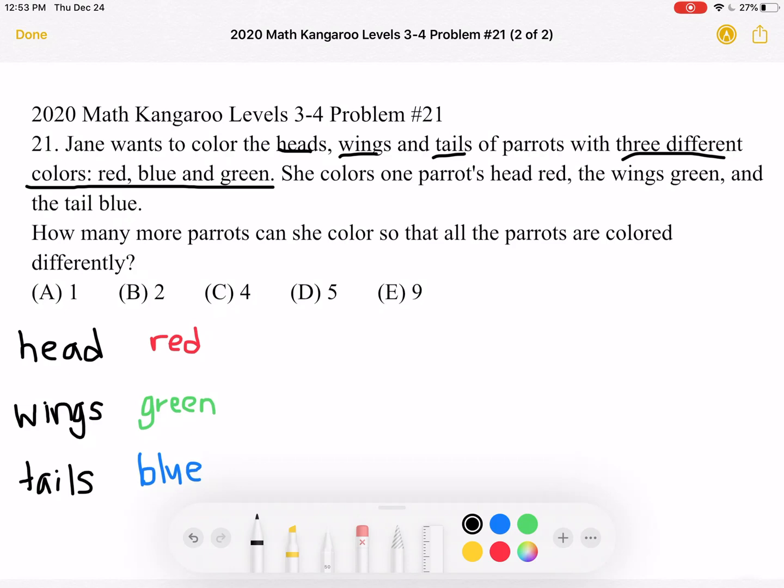So the first parrot that they mention, she colors its head red, the wings green, and the tail blue. So down here, that's what this is.